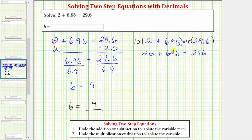The first step is to isolate the variable term by adding or subtracting. So we'll subtract 20 on both sides. Simplifying, 20 minus 20 is zero. So we have 69b equals 296 minus 20 equals 276.